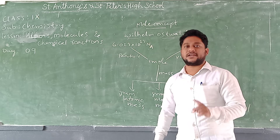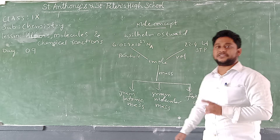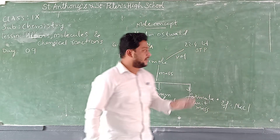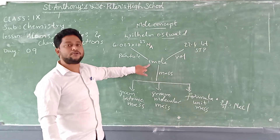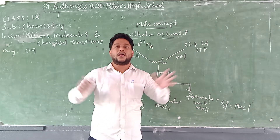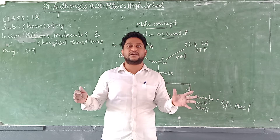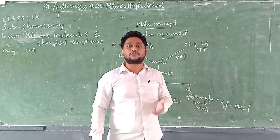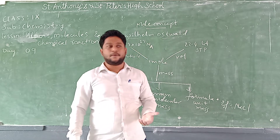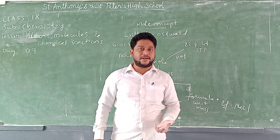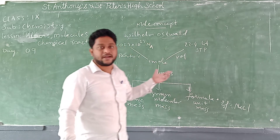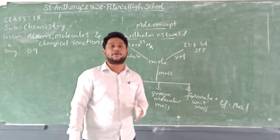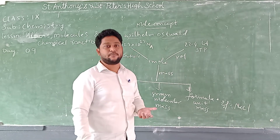To recap: one mole of a substance occupies 22.4 liters at STP, is expressed in terms of gram atomic mass, gram molecular mass, and formula unit mass. Mole is the term used to express a large number. For example, when you look at the night sky and your friend asks you to count the stars — it is not possible — so you say one mole. One mole of that sky contains 6.023 × 10²³ stars, which is Avogadro's number.